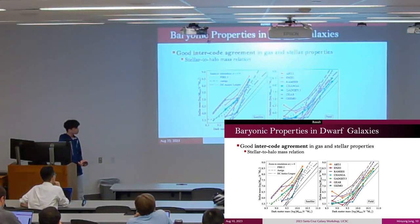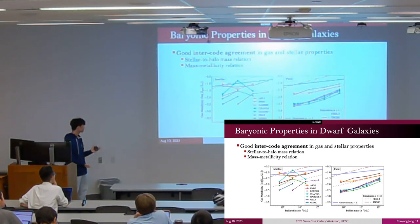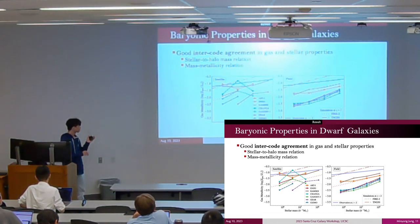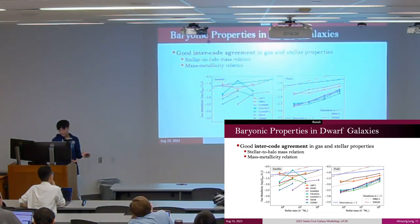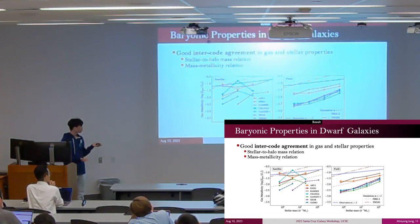Additionally, we also check the intercode agreement in other dwarf galaxy properties, such as stellar-to-halo mass relations and mass-metallicity relations. Although there is some intercode scatter, we observe that mesh-based codes generally have higher metallicities compared to the particle-based codes. We suspect this is due to the intrinsic difference in metal transportation schemes between the two code types. But all these data match well with observational data or previous studies.